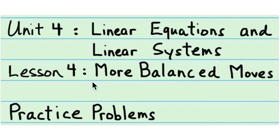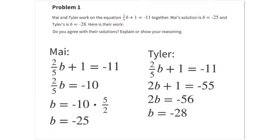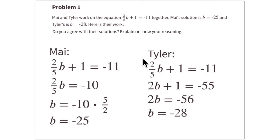This is problem number one of the practice problems, 'More Balanced Moves,' lesson four. In problem number one, both May and Tyler are working to solve the equation 2/5·b + 1 = -11. May's solution is -25 and Tyler's solution is -28. Do you agree with either of these? Explain your reasoning. Let's look at May's first.